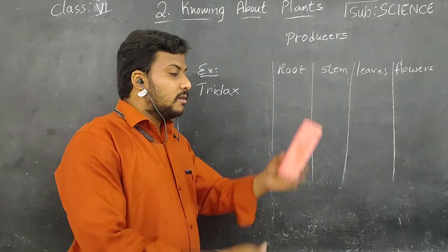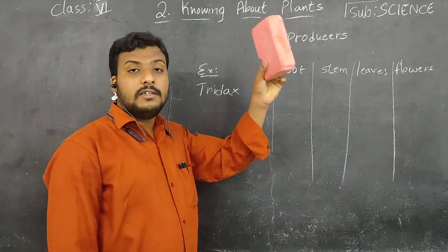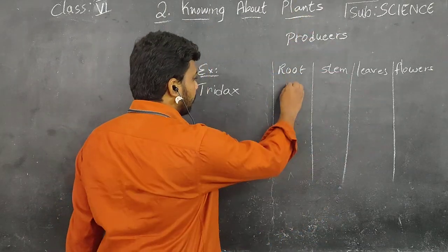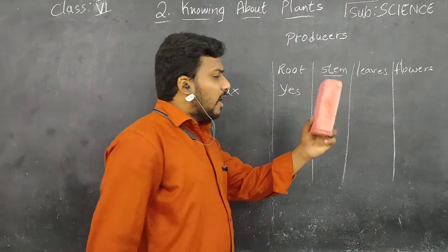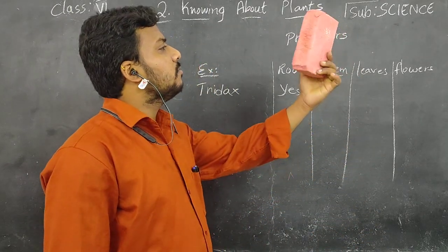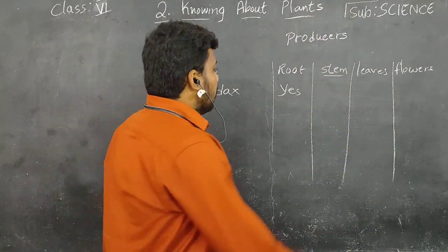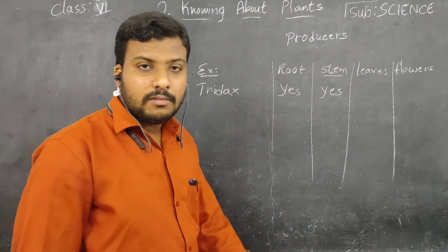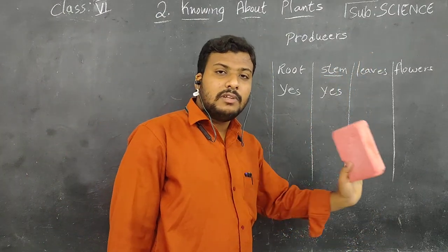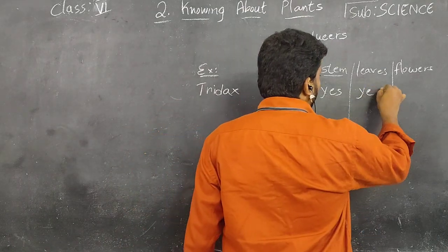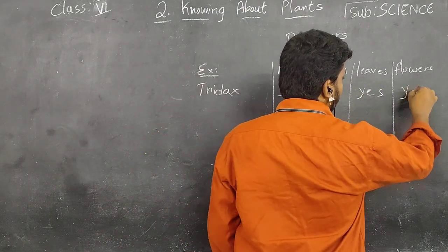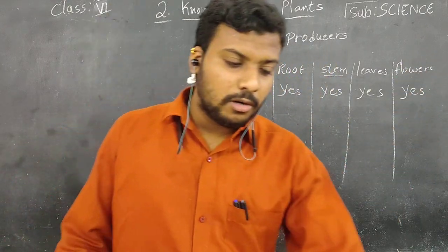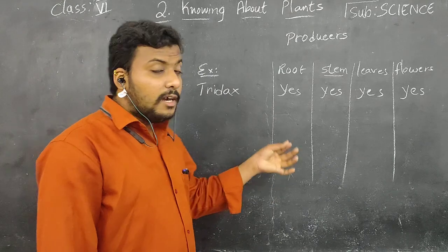Suppose you take this as a plant — you need to check whether it contains roots or not. It contains roots: yes. Next, does this plant contain a stem or not? It contains a stem: yes. Leaves — yes, children, almost every plant has leaves. Flowers — Tridax has flowers, but some plants may have flowers or may not. No problem, you identify like that.